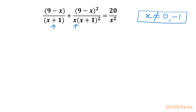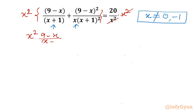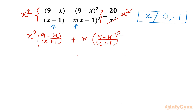Now x is non-zero, so I can multiply both sides by x². Let us multiply x² on both sides — x² and x² will cancel. After expanding, we get: x²·(9−x)/(x+1) + x·(9−x)²/(x+1)² = 20.